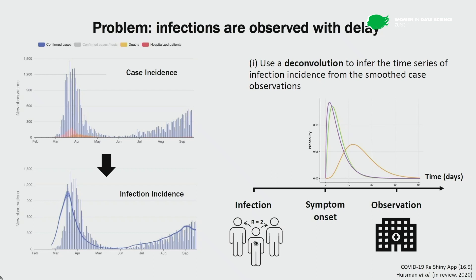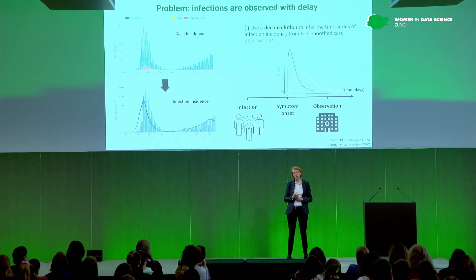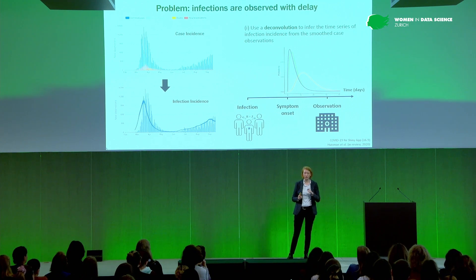We need to use information on these delays to create an estimate of infection incidence in the first place. We get information on these delays using epidemiological data — people are asked when they first developed symptoms and when they got their test results, giving us the delay from symptom onset to observation. We also have information on the time from infection to symptom onset from controlled studies where we know who infected whom. We then use a deconvolution to infer the time series of infection incidence from the observed case incidence — shown here as the drawn blue line.